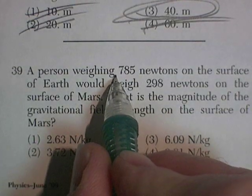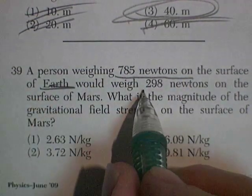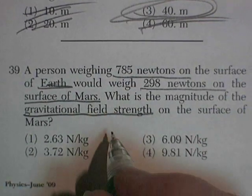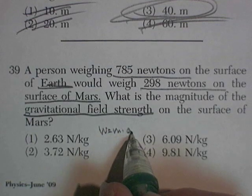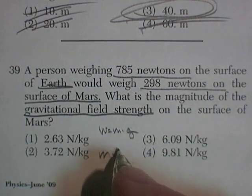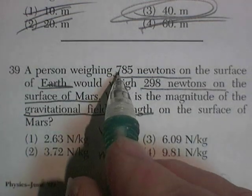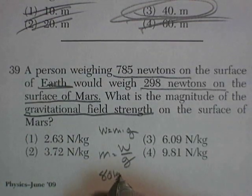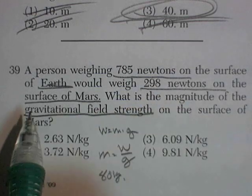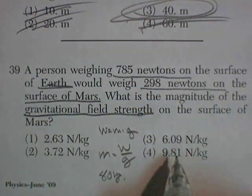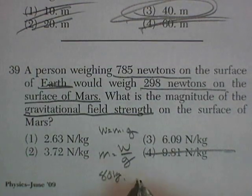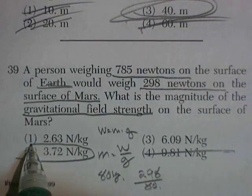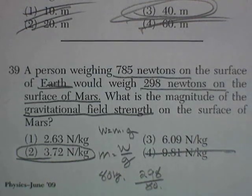Question 39: A person who weighs 785 newtons on Earth weighs 298 newtons on Mars. What's the gravitational field strength on Mars? On Earth, weight equals mass times g, so mass equals weight divided by g. 785 divided by 9.81 is about 80 kilograms. The acceleration on Mars would be 298 divided by 80, which is about 3.7 something. Units are newtons per kilogram.